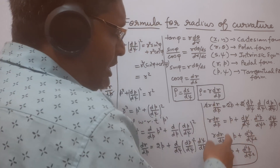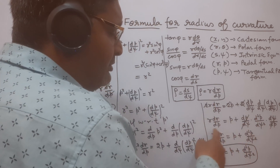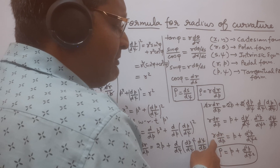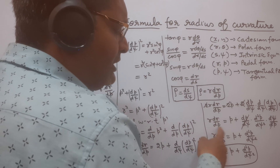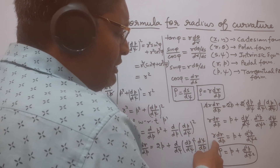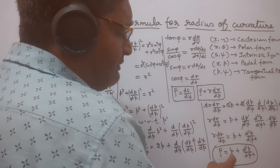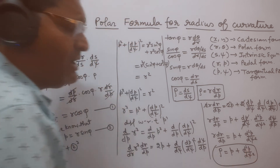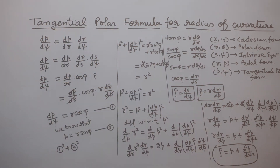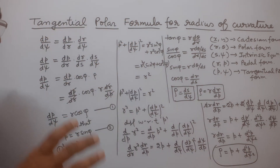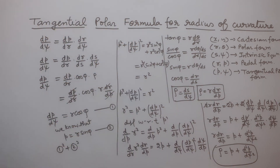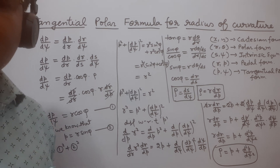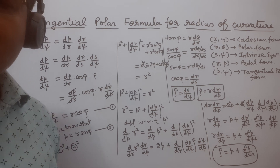So r dr/dp equals p + d²p/dψ², and r dr/dp is the radius of curvature of the pedal equation. So here we can write ρ = p + d²p/dψ². This is the radius of curvature formula for the tangential polar equation. Thank you.